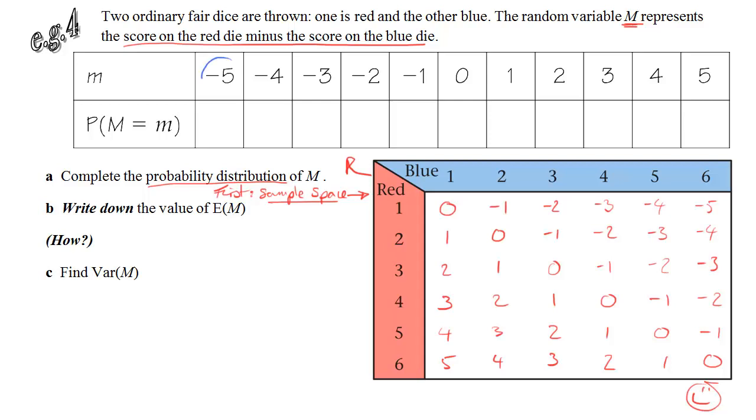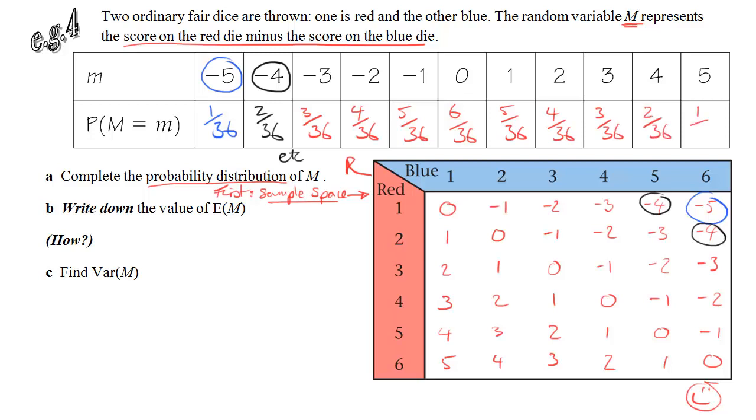If I start by considering the value of m minus five, my sample space tells me quite clearly that there's only one way to get minus five out of my 36 possible outcomes. So, that probability is one out of 36. Next, moving on to minus four. I can see that there are two ways to get minus four. So, the probability there would be two out of 36. And so on. Going through. Three out of 36. Four out of 36. Five out of 36. Six out of 36. Be careful here. You might be tempted to put seven out of 36 and just hurry your way through it, but careful. Look at the table. There are only five ways to get one. Four ways to get two. And so on. So, it actually starts to go back down again. It's useful to leave all the probabilities out of 36 rather than simplifying them.